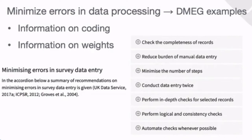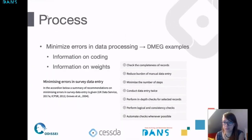The DMEG really focuses on social scientists and on examples specific to them, in particular to survey research, but there's also information on qualitative data and qualitative coding. There are some recommendations on how to minimize errors in survey data entry — things like checking the completeness of records and reducing the burden of manual data entry. For each of those, in the DMEG you can find more information telling you exactly what steps you can take to minimize errors.